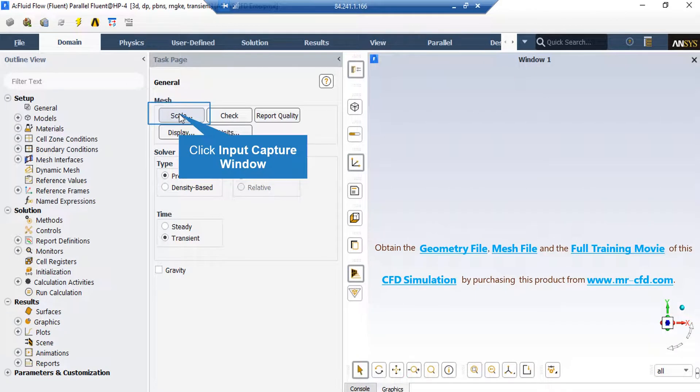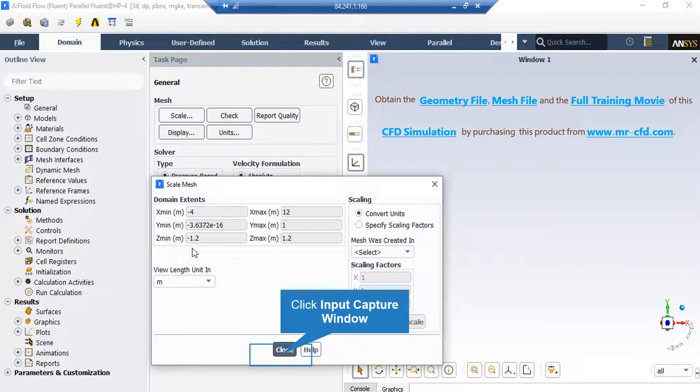Under the general setup tab, you can see different buttons from scales to units. By clicking on the scale, a new window will appear showing you the dominant extents of your geometry. Under the view length unit section, you can see the default geometry units which is meter in this project.